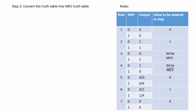Rule 7 is: when the map entered variable is 0, output is don't care, and when the map entered variable is 1, output is also don't care. So irrespective of the map entered variable, the output is don't care, and the value entered in the map will be don't care. Using these 7 rules, we will now convert the truth table from step 1 into the map entered variable truth table.